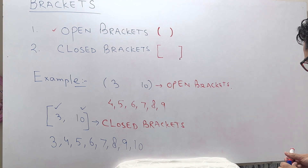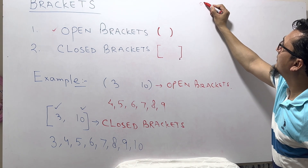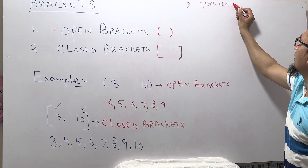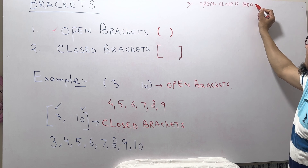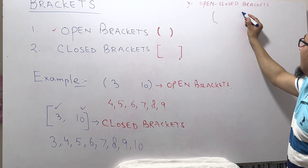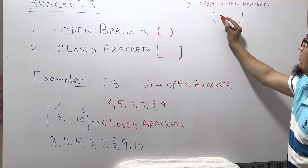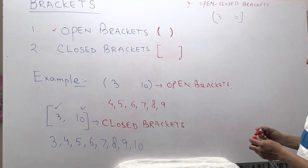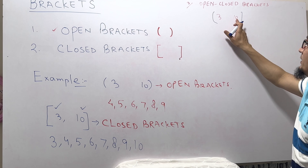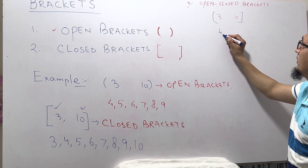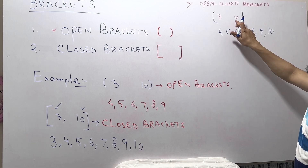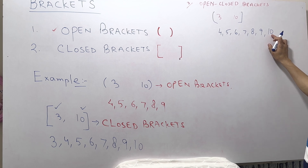Sometimes you will see an open-closed bracket. For example, (3, 10] — this is open on the left and closed on the right. It means we will not include 3, but we will include 10. So what are the numbers? We do not write 3; we take 4, 5, 6, 7, 8, 9, and 10, because 10 has a closed bracket and we include it.